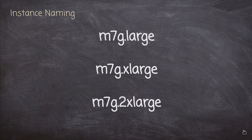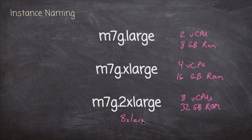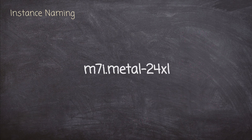Here we have three different instance sizes: M7g large, extra large, and 2x large. The large has 2 vCPUs and 8 GB of RAM. The extra large has 4 vCPUs and 16 GB of RAM. The 2x large has twice that of the extra large — 8 vCPUs and 32 GB of RAM. If you keep going up to 8x large, that would be 32 vCPUs and 128 GB of RAM — eight times the extra large. We also have a metal instance type, which means we get access to the bare metal machine underneath.